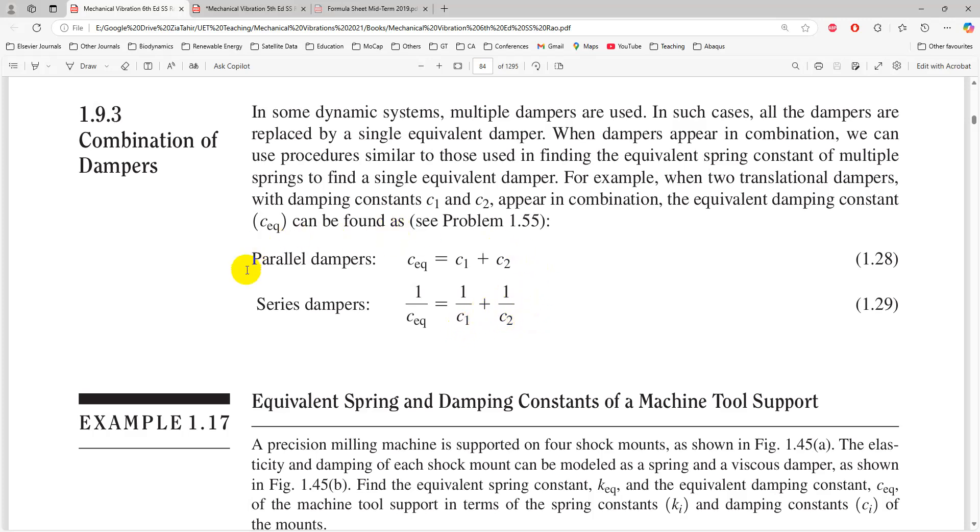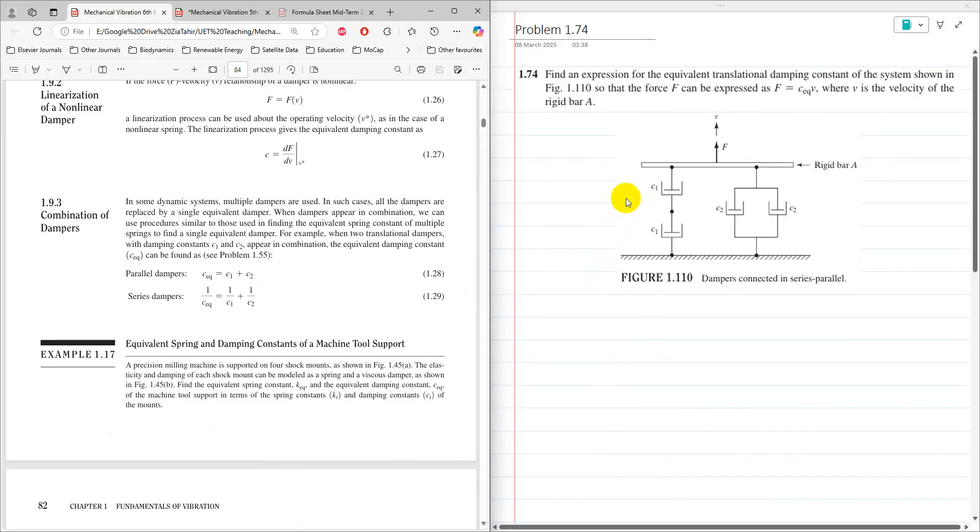Now c1 and c1 are connected in series, and c2 and c2 are connected in parallel. For dampers connected in series, 1 over c_equivalent is 1 over c1 plus 1 over c2 plus 1 over c3. So I am going to write the equivalent damping constant of both c1 dampers as c11. Then 1 over c11 equals 1 over c1 plus 1 over c1.